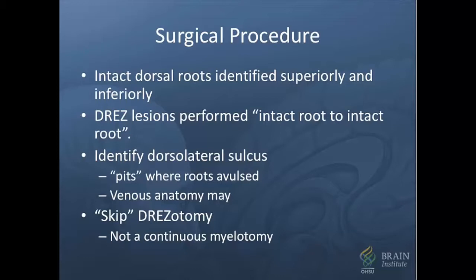I perform the DRES lesions with a micro-knife and micro-bipolar. I perform what I call a skip DREZotomy, meaning that a series of 10 mm linear lesions are made discontinuously, separated by 2 mm of intact pia. I have found that if a longer continuous DREZotomy is performed, the underlying dorsal horn tends to herniate through the lesion, producing a deeper and more extensive lesion than intended. The skip lesion accomplishes the same goal without the eversion of the spinal cord through the lesion.